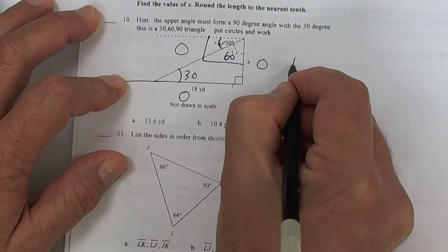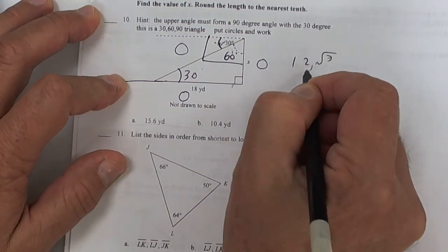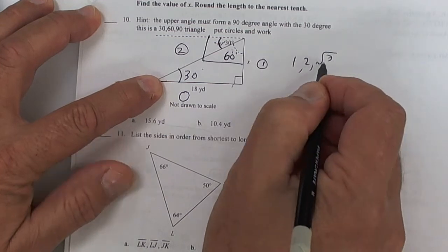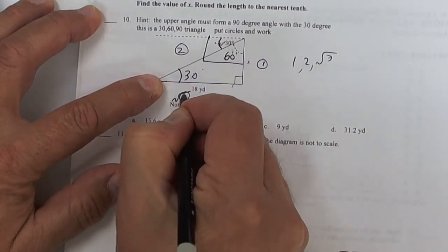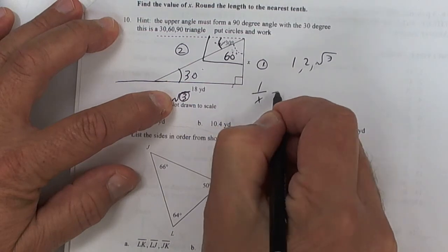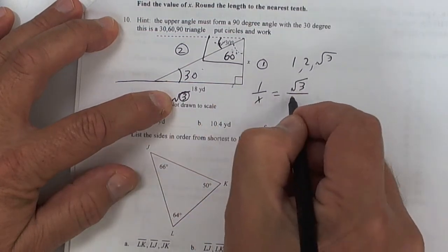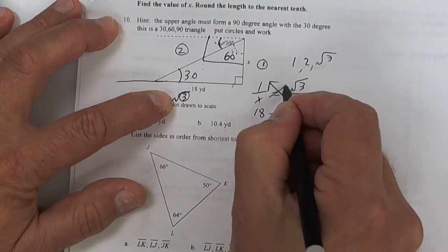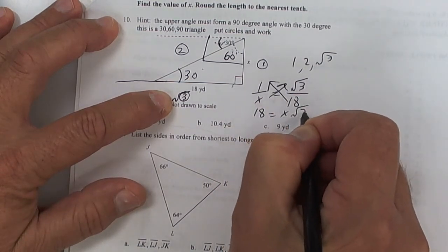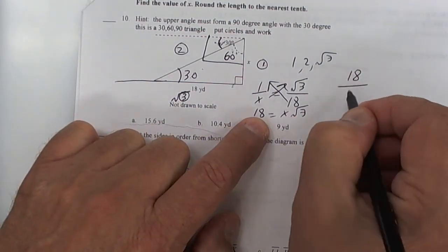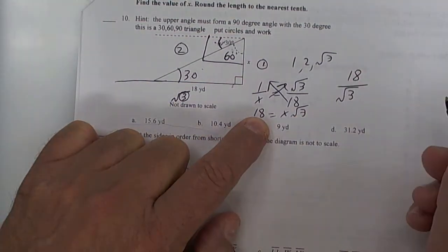All right. And then put your circles. You had to memorize 1, 2, square root of 3. 2 is the biggest. So that goes here. Across from the 30 goes to 1. And across from the 60 goes to square root of 3. So on your test, you're going to say 1 over x equals square root of 3 over 18. And then you're going to cross multiply. So you get 18 equals x square root of 3. But then you've got to divide by the square root of 3. So you get 18 divided by the square root of 3 is your answer.